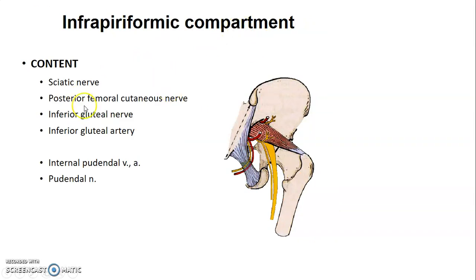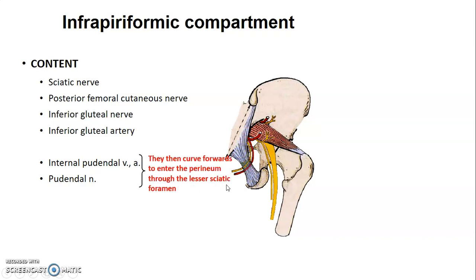The infrapiriform compartment, below the piriformis muscle, contains the sciatic nerve, posterior cutaneous nerve of the thigh, inferior gluteal nerve and inferior gluteal vessels, as well as the pudendal nerve and internal pudendal vessels. The pudendal nerve and vessels pass through the infrapiriform compartment, then curve forward to enter the perineum through the lesser sciatic foramen.